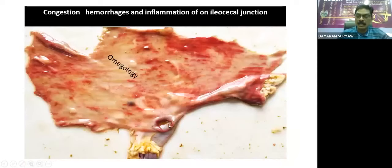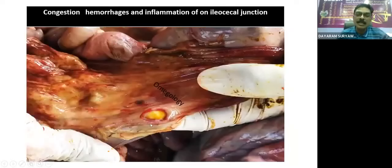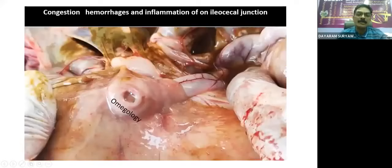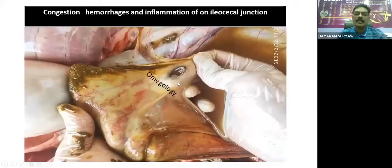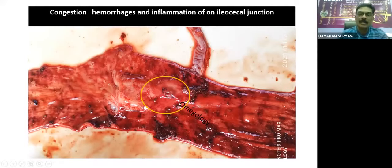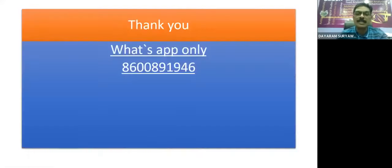Here we can see the margins of the ileocecal junction showing severe hemorrhages and necrosis. Another finding is edema of the ileocecal junction with pinpoint hemorrhages. There is severe sloughing of the large intestinal mucosa and necrosis of the ileocecal junction. We can see the necrotic portion along with very small, tiny pinpoint hemorrhages at the margin of the ileocecal junction.